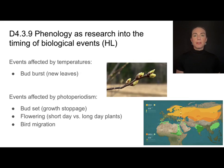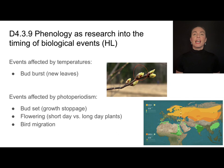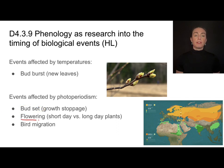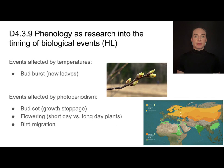Some examples of things affected by temperature include bud burst — new leaves on a plant. Things affected by photoperiodism include bud set, which is growth stoppage of a plant, the flowering of a plant, and bird migration. Those are all impacted by photoperiodism.